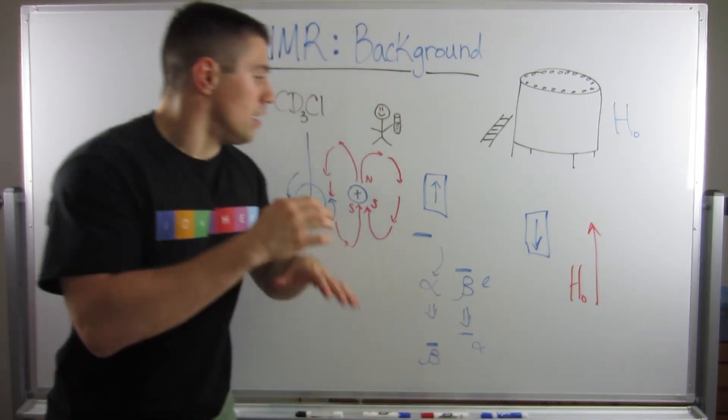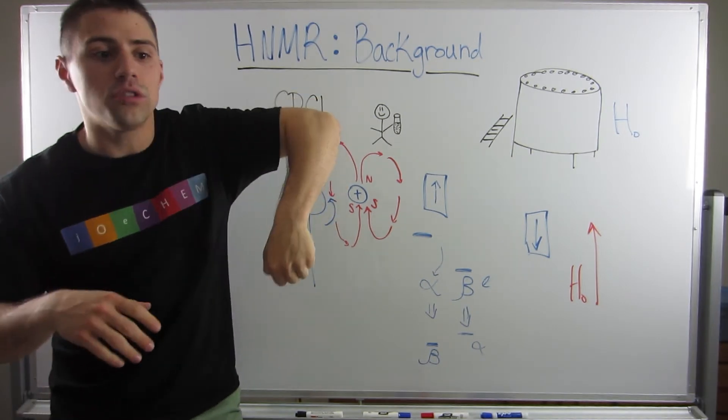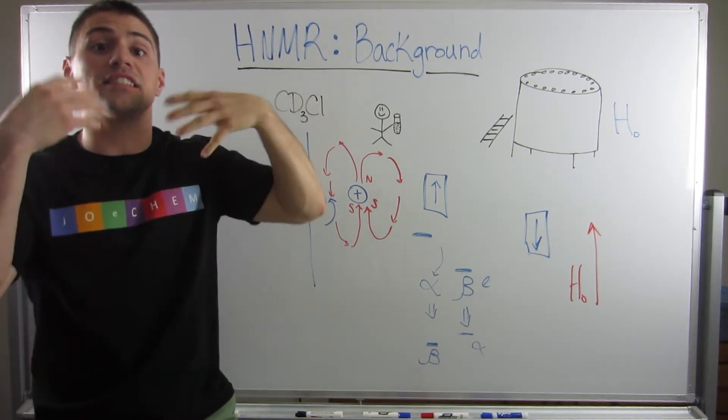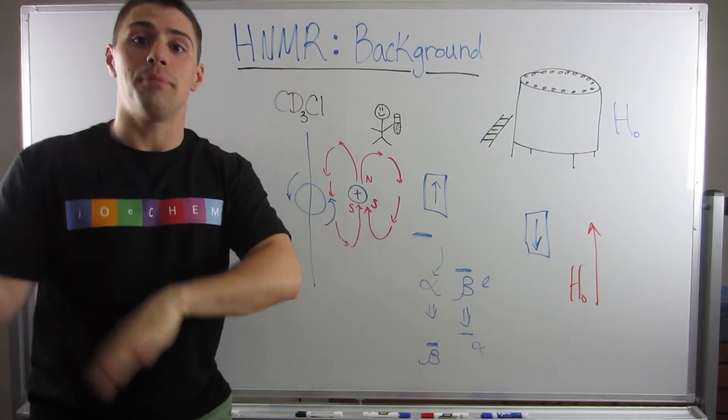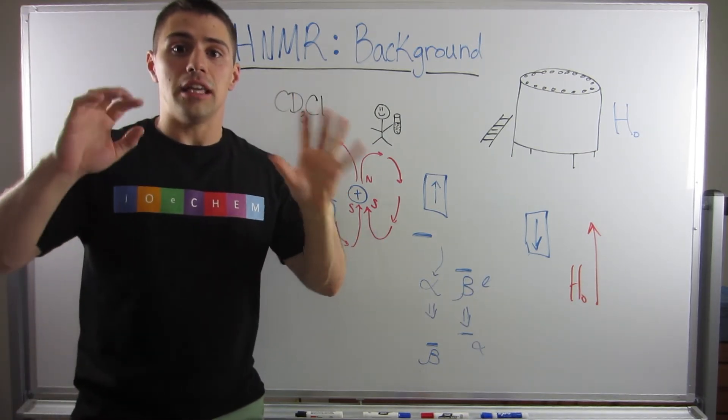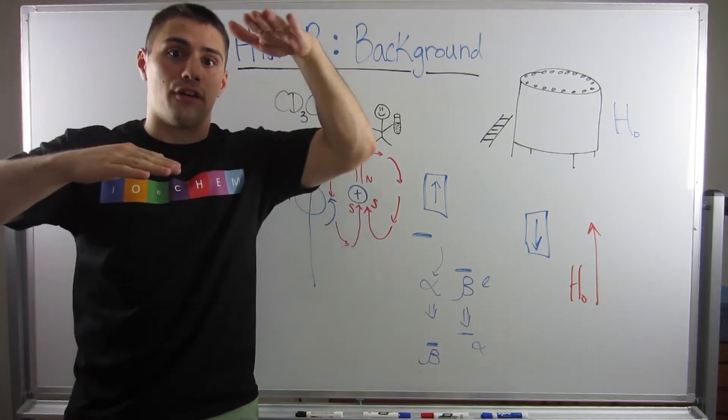So you have this constant equilibrium of nuclei opposing the field and gaining enough energy to then get excited and give off energy, and then nuclei that are already excited and give off energy and then go to the beta state. So you have constant equilibrium of nuclei going alpha, beta, alpha, beta, alpha, alpha, beta, alpha.